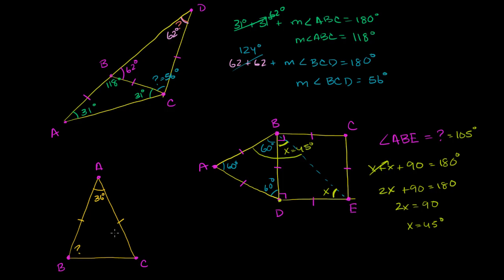Now we have this last problem, which looks a little simpler. I have an isosceles triangle where this leg equals that leg. This is the vertex angle, and I have to figure out B. If this is an isosceles triangle, then the two base angles are equal. If we call each base angle x, we get x plus x plus 36 degrees plus 36 is equal to 180.